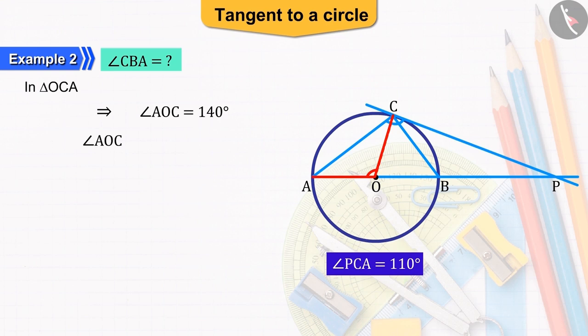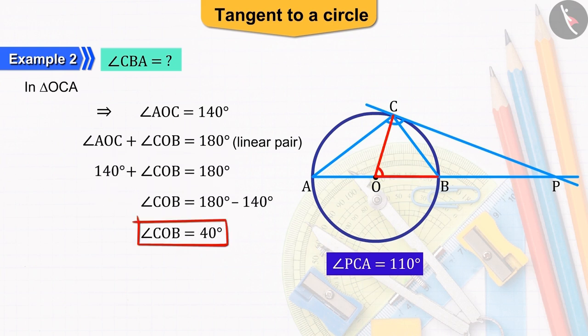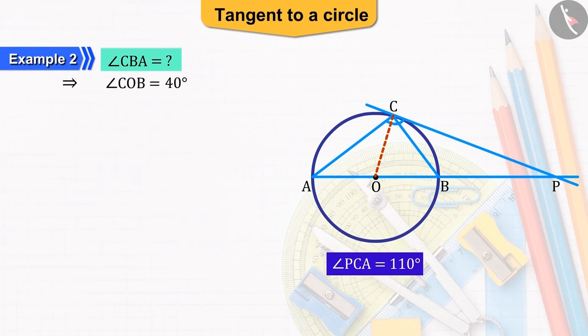Which gives us the angle AOC equal to 140 degrees. Also, the angles AOC and angle COB form a linear pair. So, the angle COB will be equal to 40 degrees.